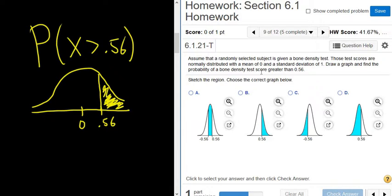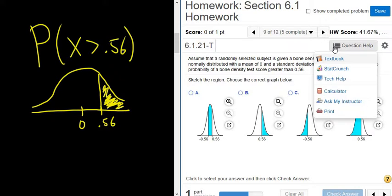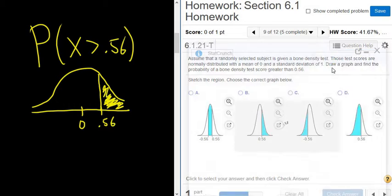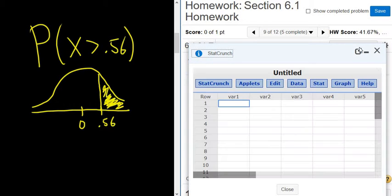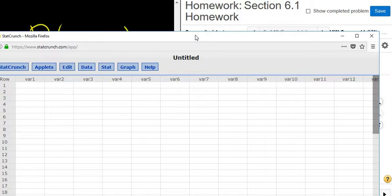Now we just go to StatCrunch to get the answer. So you click on Question Help, then go to StatCrunch, and hit this button to detach it and make it easier to look at.